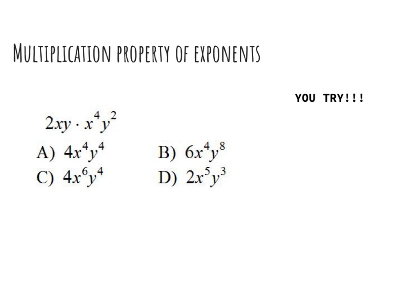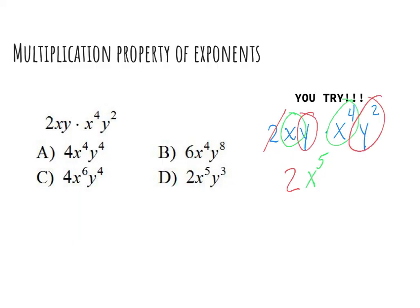So now you try. I'm going to work with my numbers first — 2 is my only one, so 2 times 1 is just 2. Then I'm going to focus on my x's. I have 1x and then 4x's, so I will add — that's going to give me 5x's. And then I'm going to have my y's. I have 1y and 2y's, so when I add, that gives me 3y's. So my correct answer would be D: 2x to the fifth power times y to the third power.